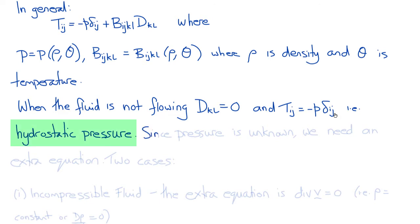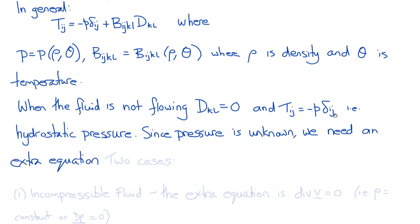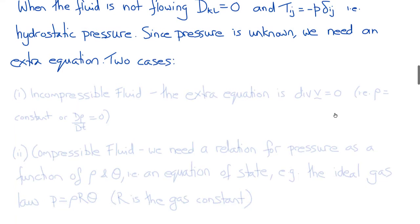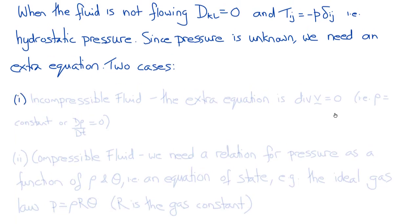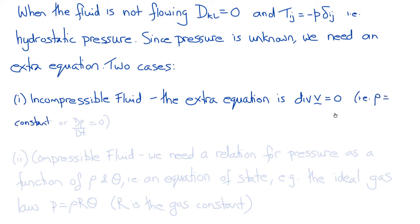Since the pressure is unknown in this formulation, we need an extra equation or condition to find it. There are two possibilities. The first is incompressibility: in an incompressible fluid, we have the extra constraint from conservation of mass that, since the density is constant, the divergence of the velocity vector is equal to zero.